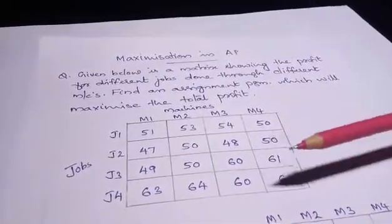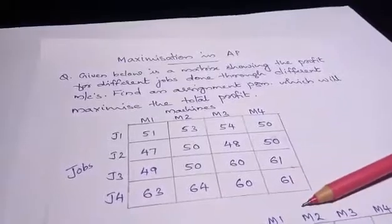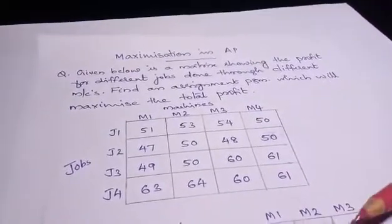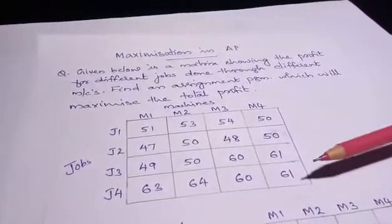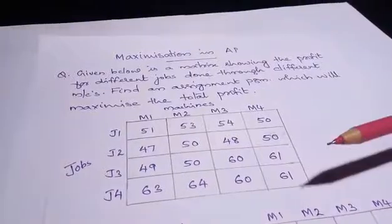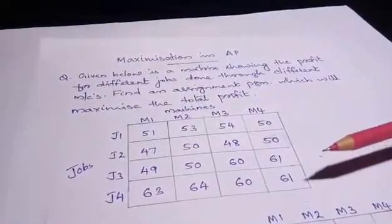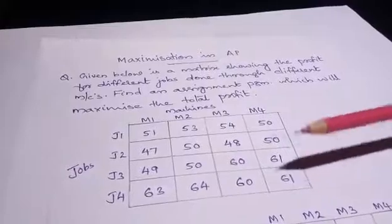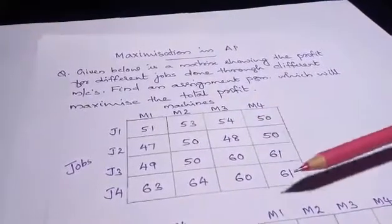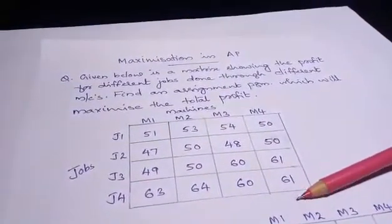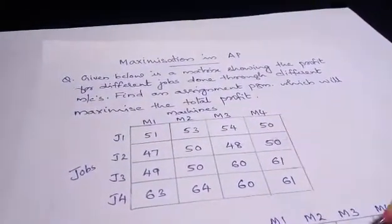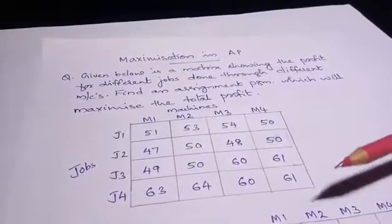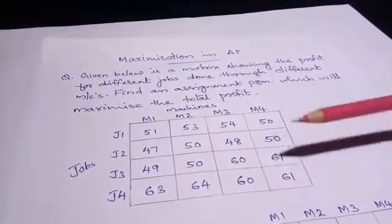We follow the same method: row minimum, column reduction, row scanning, and column scanning — methods type 1, 2, and 3. At last, you will get the number of marked zeros equal to the number of rows, and then get the final answer.